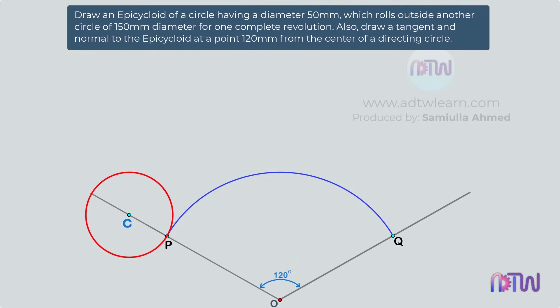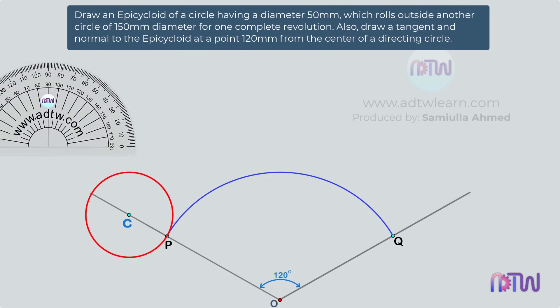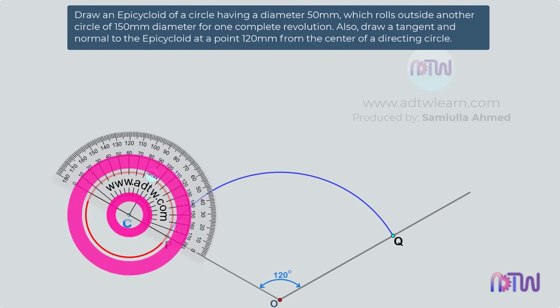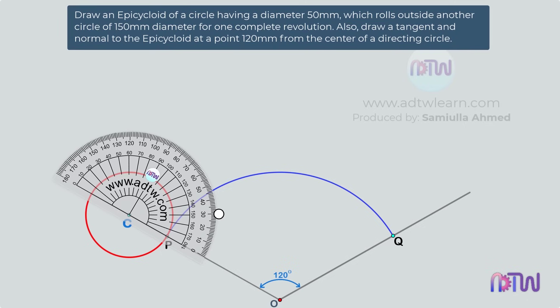Next, extend the line and mark the radius of the smaller circle, which is 25 millimeters or 2.5 cm. Mark a point at 2.5 cm from point P and name this point C. Take a compass, take 2.5 cm, and using point C as center, draw a circle. After this, we need to divide this circle into 12 parts; each sector will be 30 degrees. Take a protractor and mark 30, 60, 90, 120, and 150 degrees.